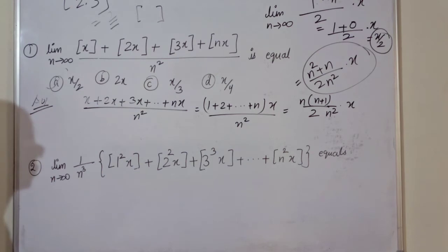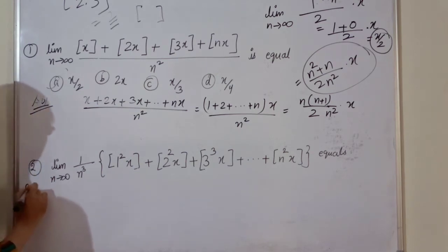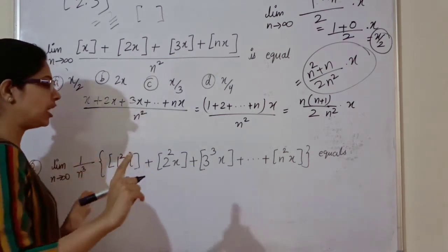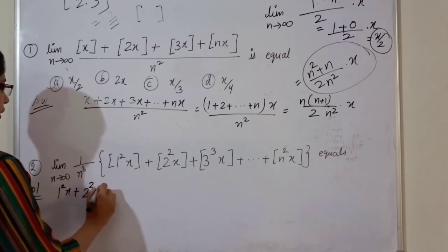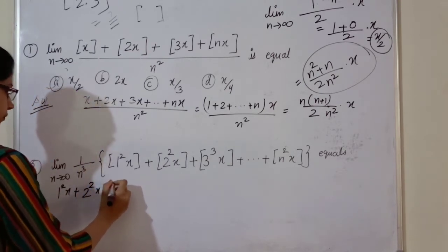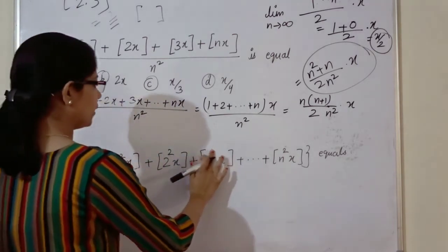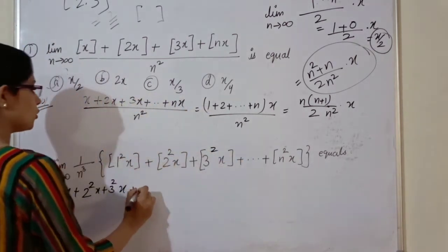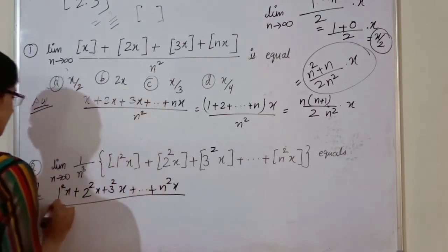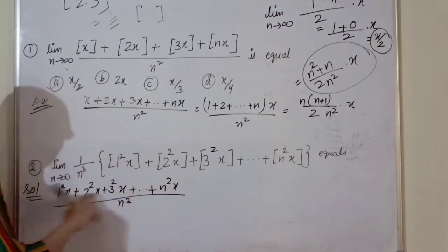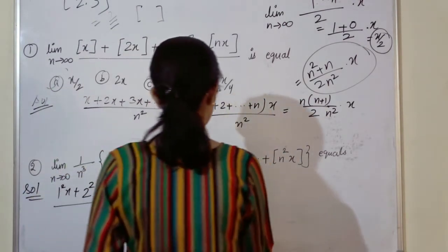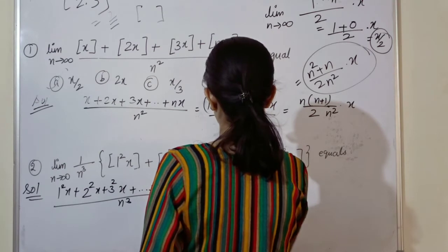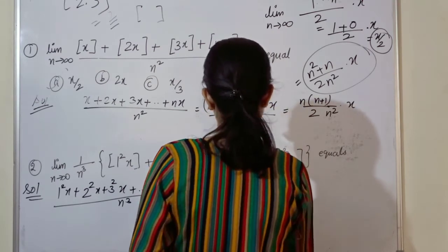As n approaches infinity, we simply write the greatest integer function. So we write 1 squared x plus 2 squared x plus 3 squared x, up to n squared x, all divided by n cube. Taking x common from the numerator gives 1 squared plus 2 squared plus 3 squared up to n squared, times x, divided by n cube.